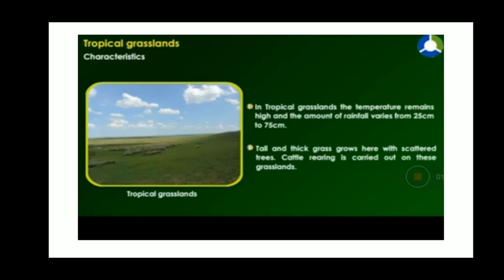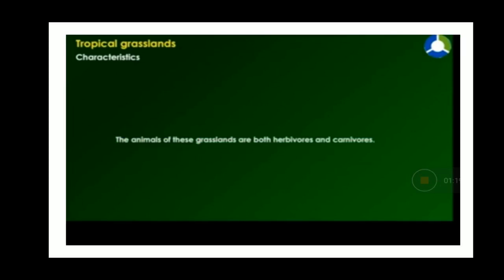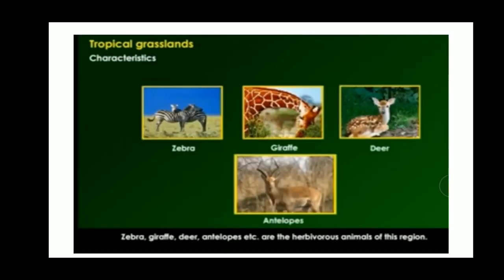Cattle rearing is carried out on these grasslands. Now we will learn about the wildlife in tropical grasslands. The animals of these grasslands are both herbivores and carnivores. The herbivore animals found in tropical grasslands are zebra, giraffe, deer and antelope.